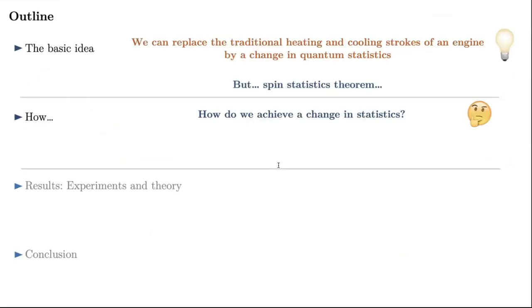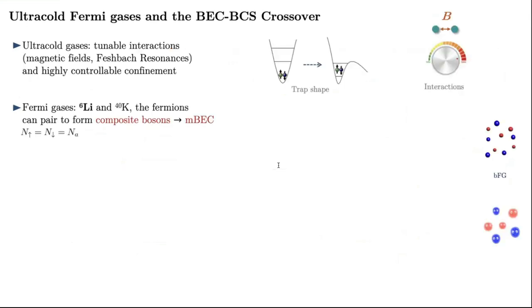But, everyone here knows that particles with integral spin are bosons, and particles with half integral spin are fermions. That is known as spin statistics theorem, and was proven by Pauli in the 40s, giving a relationship between the statistics and the spin, which is the fundamental property of the particle. So, the main question is, how can we achieve a change in statistics? And, the answer is, using ultracold fermi gases in what is known as the BEC-BCS crossover.